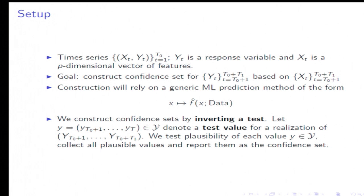Later on we will require some other conditions on this black box method, but any method here with some stability properties would work. Then we're going to construct confidence sets by inverting a test. We will let little y denote a test value for a realization of the future trajectory, and we're going to test plausibility of each value. Then we're going to collect all the plausible values and report them as the confidence set.